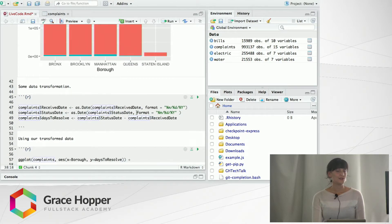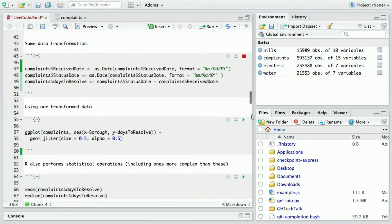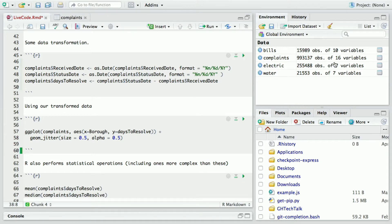So R can also be used to transform data. What I did here was I just took the column—if you want to access a particular column within a data frame you just reference it by putting a dollar sign—and I recast them as dates. And then I created a brand new column called days to resolve which just subtracted the received date from the status date to see how long that took. So you can see here in my environment I had 15 variables or columns and now I have 16 because there's a brand new column there called days to resolve.